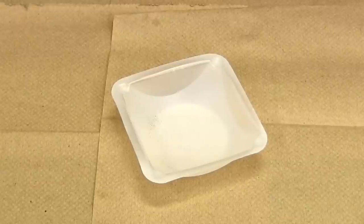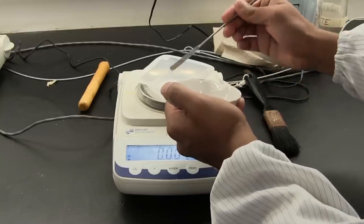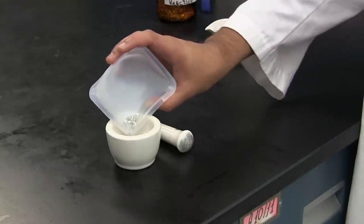Use a weighing boat to obtain the required mass of magnesium turnings. Transfer the weighed out magnesium shavings into the mortar for grinding.